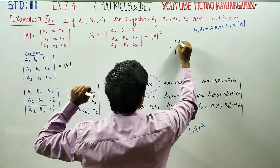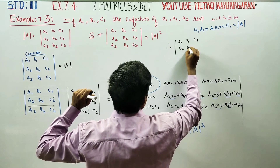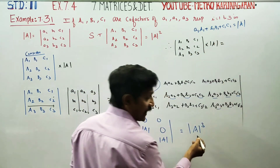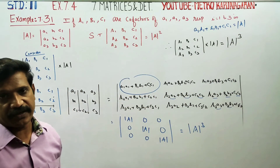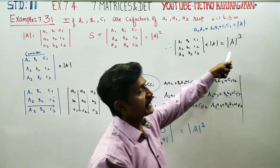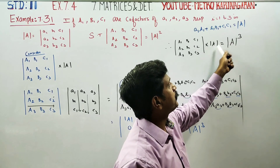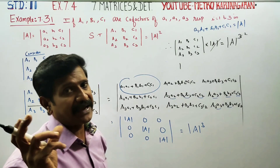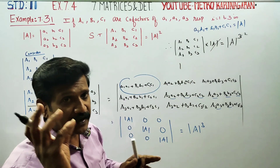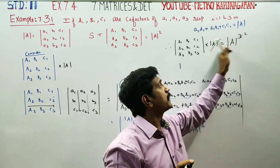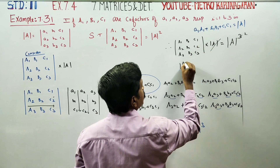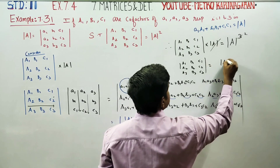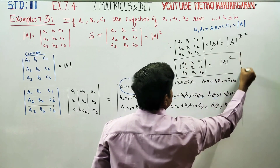Therefore, the cofactor matrix with elements capital A1, B1, C1, A2, B2, C2, A3, B3, C3 multiplied by the determinant A gives determinant A cubed. You can cancel — determinant A is a value, not a matrix, so it is a number, for example 5. Cancelling gives determinant A squared. Hence, the cofactor matrix determinant equals determinant A squared. That is your final result. Okay, thank you.